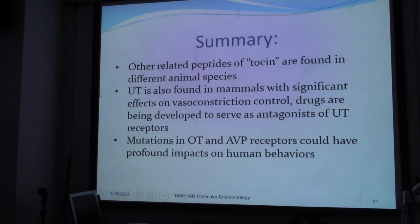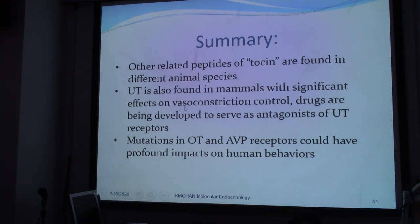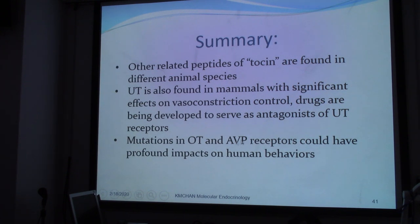In summary, there are oxytocin-related peptides found in different animal species. Urotensin is being focused on — it has profound effects on muscle constriction, and therefore drugs are being developed to serve as antagonists of the UT or urotensin receptor. We have also discussed mutations in oxytocin and vasopressin receptors that have profound impacts on human behavior.